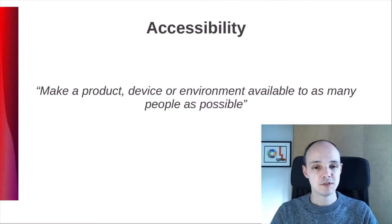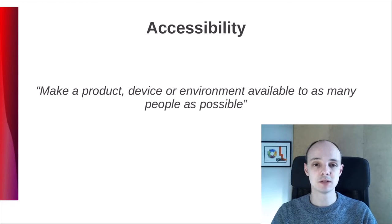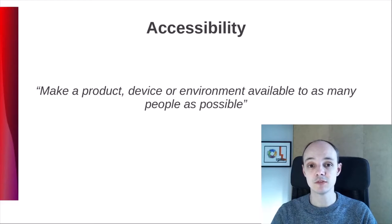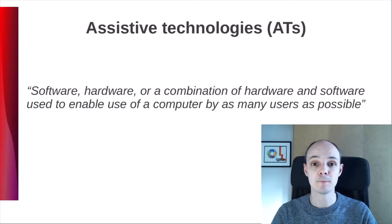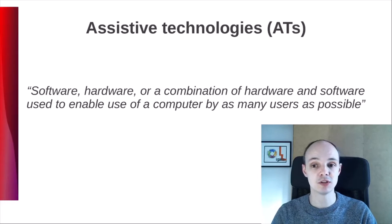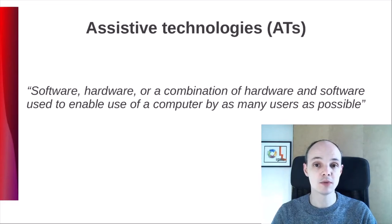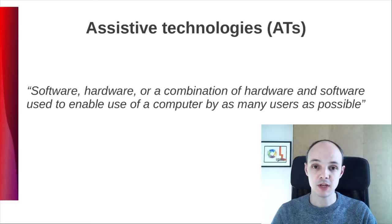So, first of all, what's accessibility? We can say accessibility is to make a product, device, or environment available to as many people as possible. It applies to anything, from buildings to software. It's a simple idea with a lot of challenges behind. In the IT world, we reach accessibility through the use of assistive technologies, shortened as ATs, which are software, hardware, or a combination of both, used to enable use of a computer by as many users as possible.